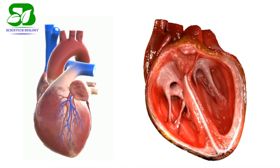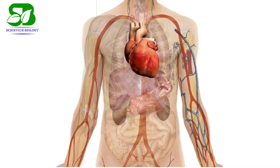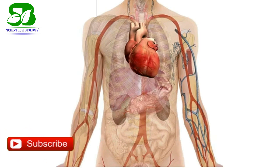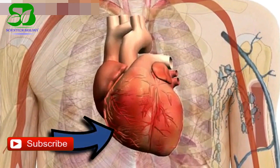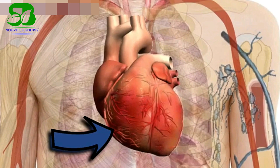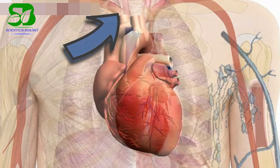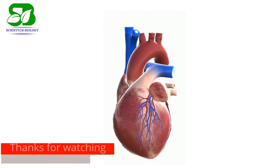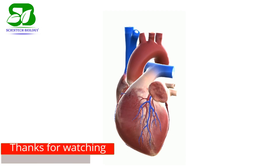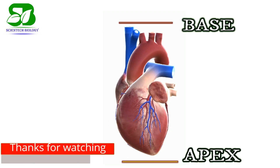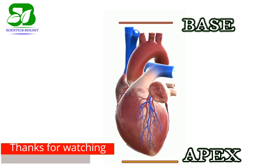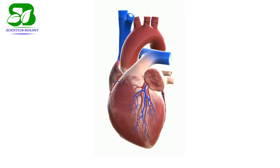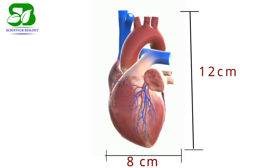The human heart is a hollow, cone-shaped muscular organ that lies in the thoracic cavity in between the two lungs and remains slightly inclined towards the left side of the body. The upper broad end is called the base and the lower tip is called the apex. The human heart is 12 cm long and 8 cm broad.